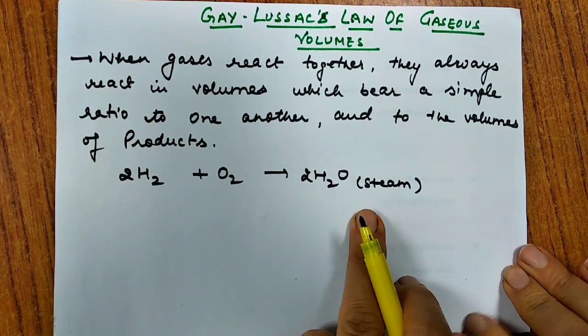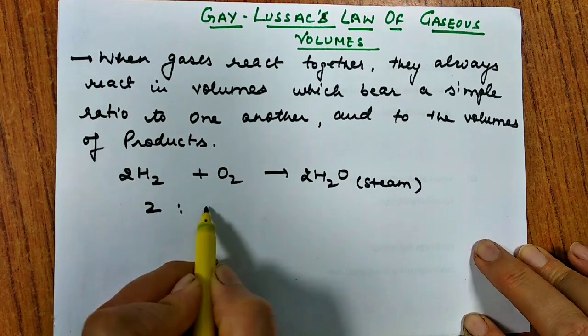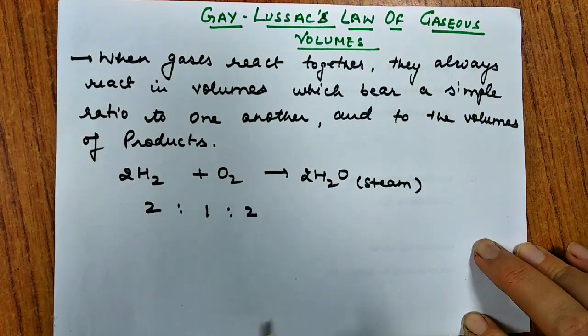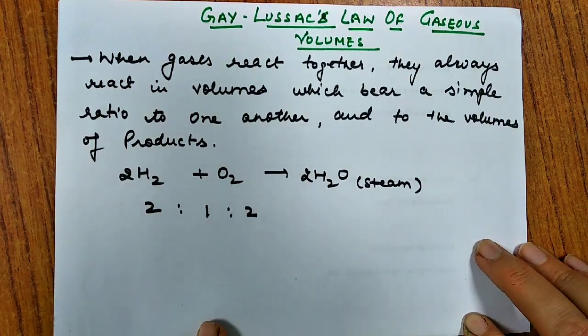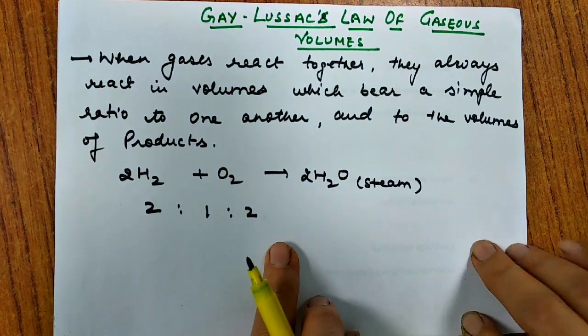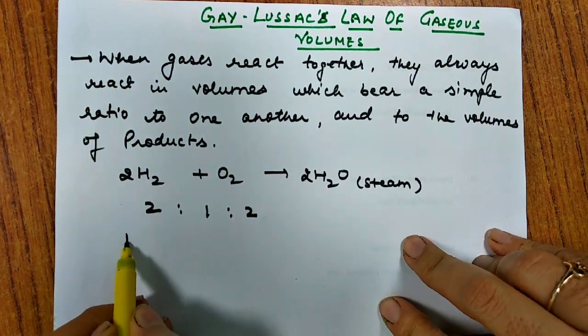So the ratio between volume of reactant and product is simple — that is 2 is to 1 is to 2. And that is all about the law.